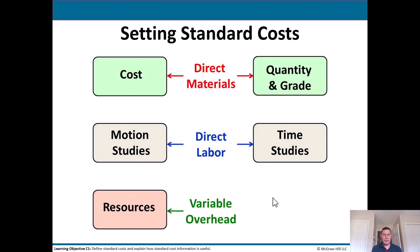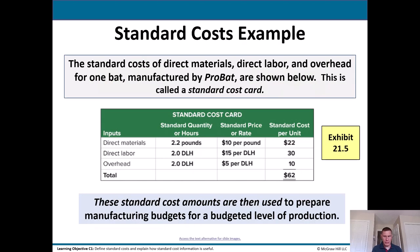Setting standard costs. For direct materials, we think about quantity — how much do we need? Maybe we can get bulk discounts. Also think about the grade of material — basically quality — because the higher the quality, the more you'll pay. For direct labor, we can use motion and time studies to determine how long it should reasonably take to do something. For variable overhead, we look at the resource consumption for variable overhead incurred. Let's take a look at an example of standard costs. The standard costs of direct materials, direct labor, and overhead for one BAT manufactured by ProBAT are shown on this standard cost card.